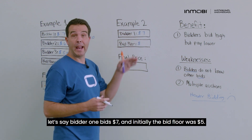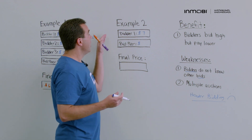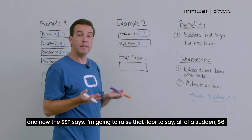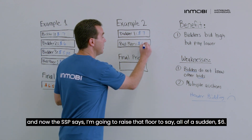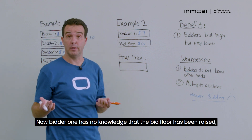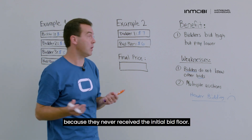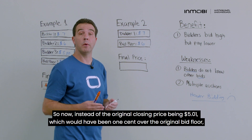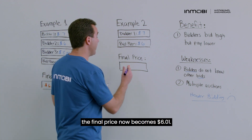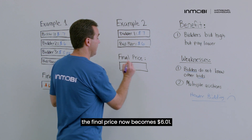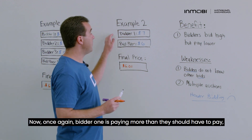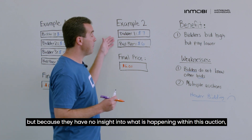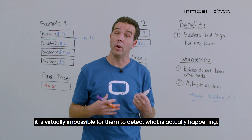To make this more concrete: bidder one bids $7 and initially the bid floor was $5. The auction is held with only one bidder at $7, and the SSP then raises the floor to $6. Bidder one has no knowledge the floor has been raised because they never received the initial bid floor. So instead of the closing price being $5.01 — one cent over the original floor — the final price becomes $6.01. Bidder one is paying more than they should, and because they have no insight into what's happening, it's virtually impossible to detect.